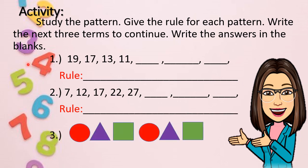For number 3, you have circle, triangle, square, red circle, violet triangle, and green square. What are the next three terms? And what is the rule? You'll be given 5 minutes to answer.